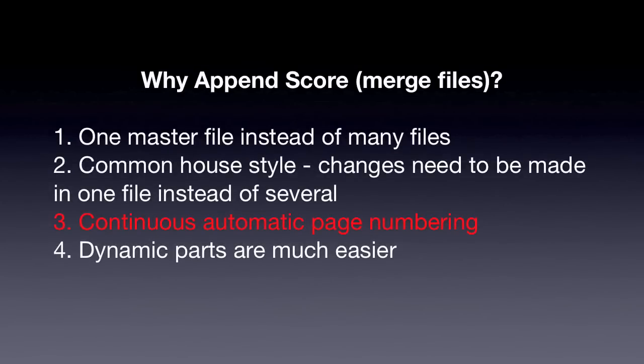Another reason is page numbers. Say you have a song that's three pages long, then a second song would start on page four, and say that's two pages long, and the next song would start on page six and so on. Say in that first song you decide you need to add a 16-bar tag at the end of it, and that bumps the song onto another page — so you have four pages. Now you have to go into the next file and change that page number from four to five, and the next one from six to seven. If you have 20 songs, you have to make the change in 20 files just to accommodate a change in one song. In one file, page numbers are automatic — they're continuous and you don't have to think about it. So if you want to add music to one particular song, everything else will change automatically.